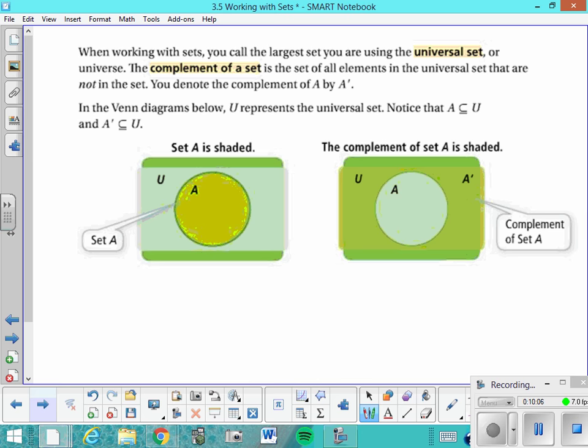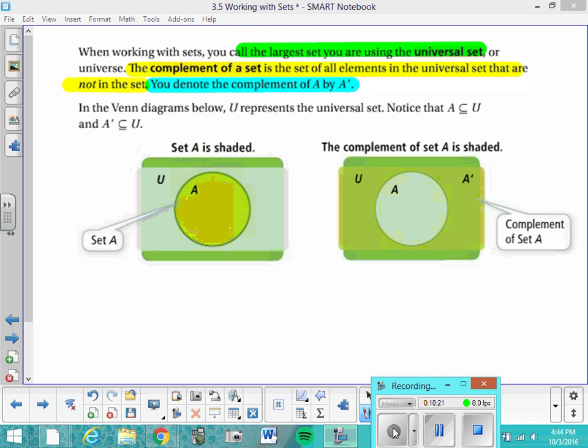When working with sets, you call the largest set you are using the universal set, or universe. And I think you should write that down. The complement of a set is the set of all elements in the universal set that are not in the set. I would very much like you to copy down in your notes the green, the yellow, and the blue highlighted sentences. Let's take a look at this Venn diagram and read it along together. In the Venn diagram, U represents the universal set, the largest set we're working with. And notice that A is a subset of U. So basically it's just saying that A contains a smaller number of elements than does set U. And A prime, that's the way we read that little dash right there, is also a subset of U. Together, A and A prime make up U.